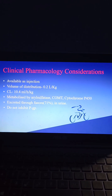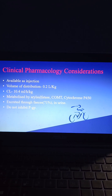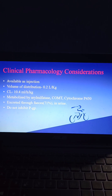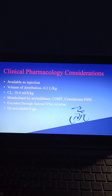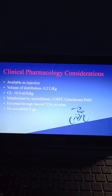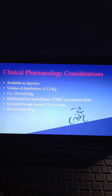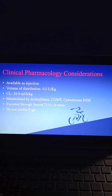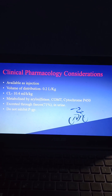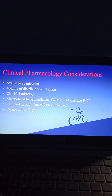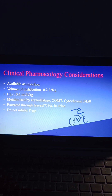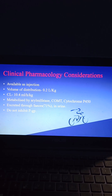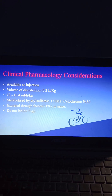Coming to clinical pharmacology considerations, micafungin is available as injection. Volume of distribution is very low, 0.2 liters per kg, and clearance is 10.4 ml per hour per kg. It is metabolized by aryl sulfatase, COMT (catechol-O-methyltransferase), and cytochrome P450. It is excreted through feces 71% and also in urine.